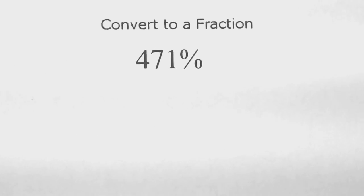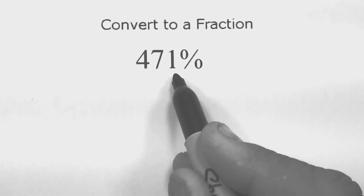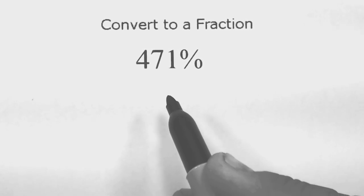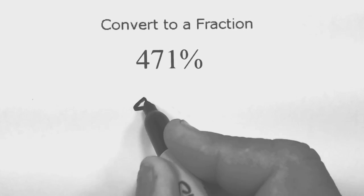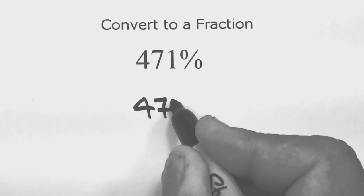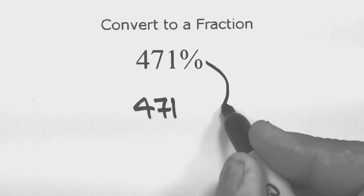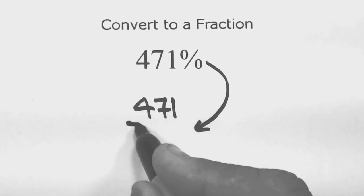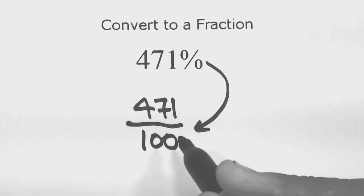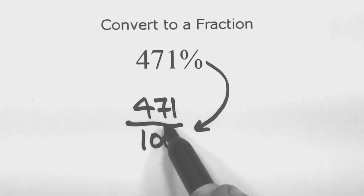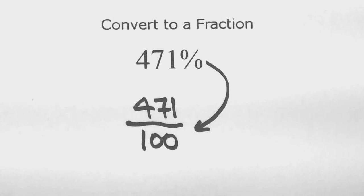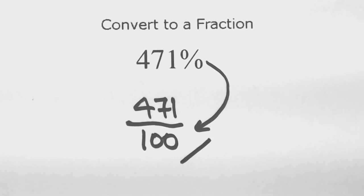Here's another similar one: convert 471% to a fraction. Write four seventy-one and trade the percent sign in for over one hundred. In this particular case there's nothing we can reduce top and bottom, so we leave it as the improper fraction four hundred seventy-one over one hundred.